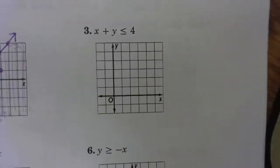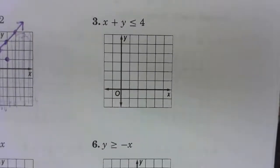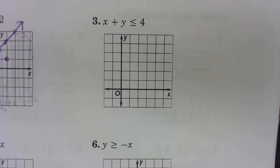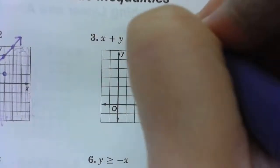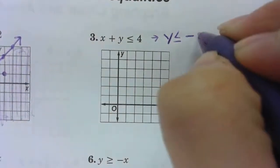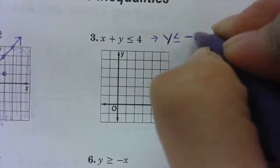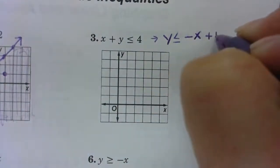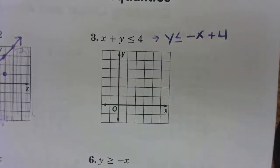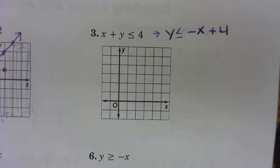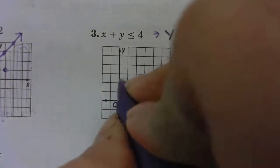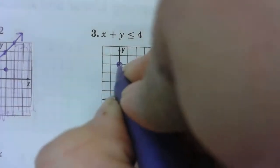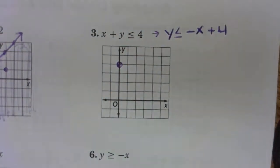Okay. And number three. This graph is in standard form. So to make our life a little bit easier, we're going to subtract x to the other side so that the y value is isolated. So you have y is less than or equal to negative x plus four. Okay. Will, what is my y-intercept? Excellent. So we plot our starting point at zero, four.